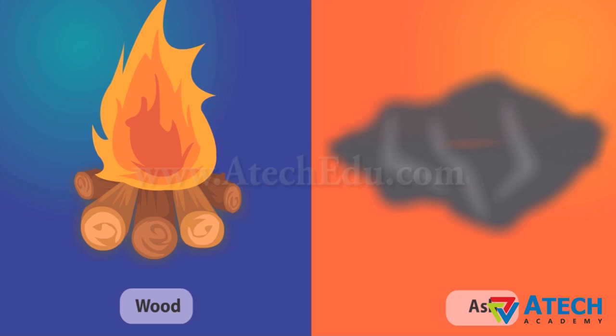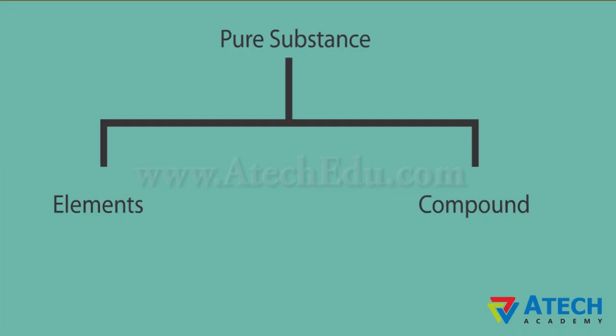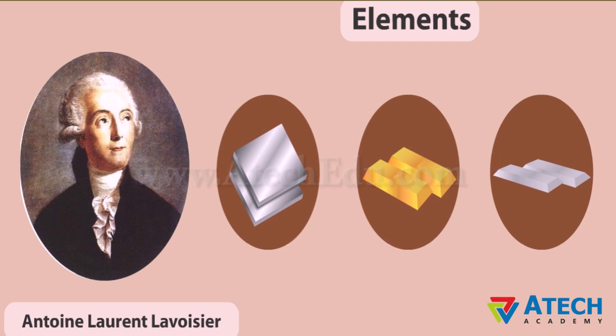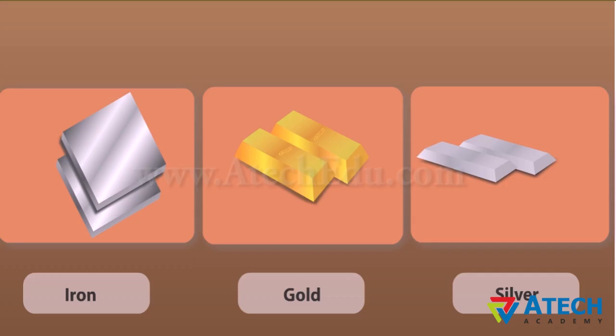You told me about mixtures, but what are the types of pure substance? They are mainly classified as elements and compounds. According to Antoine Laurent Lavoisier, an element is a basic form of matter that cannot be broken down into simpler substances by chemical reactions. For example, iron, gold, and silver are elements — they exist in their simplest form. Elements can be divided into metals, non-metals, and metalloids.